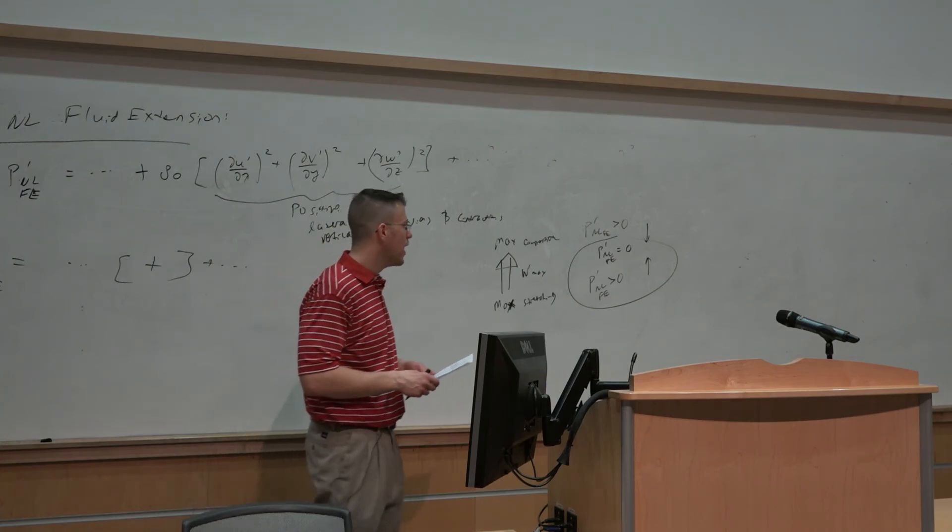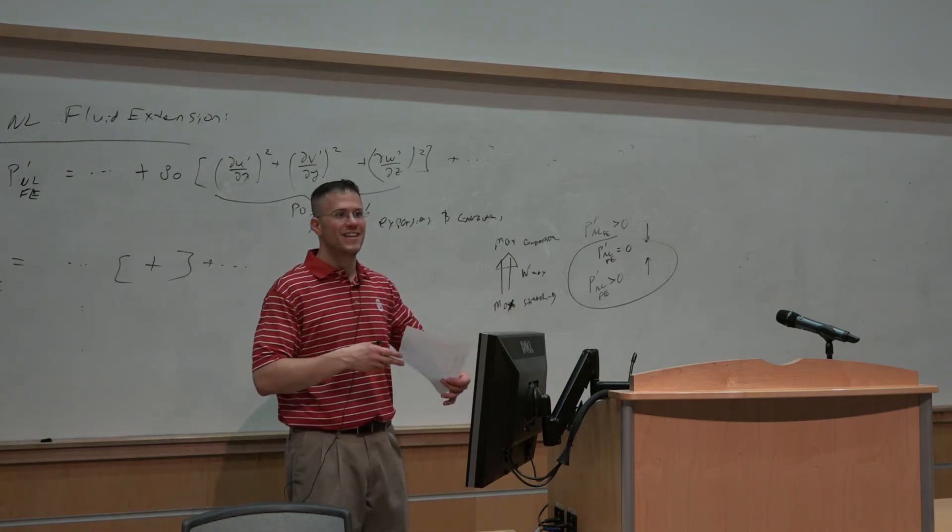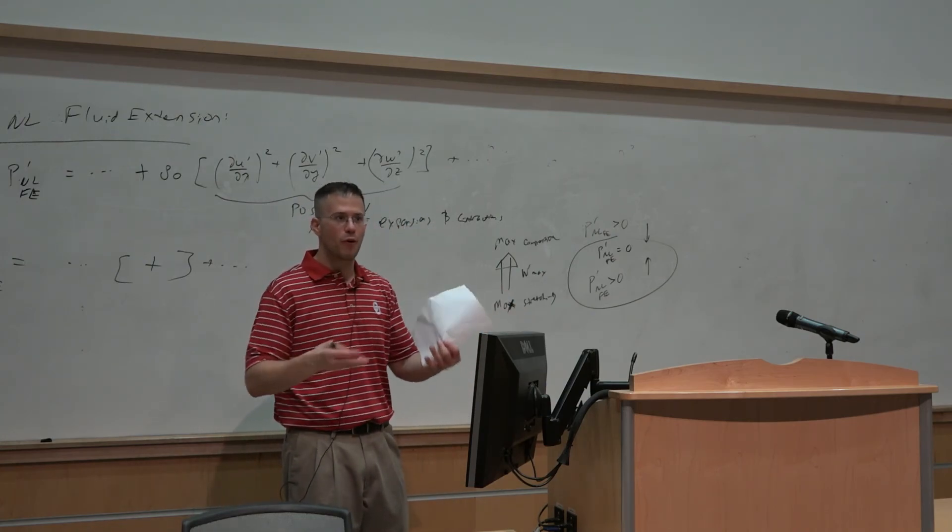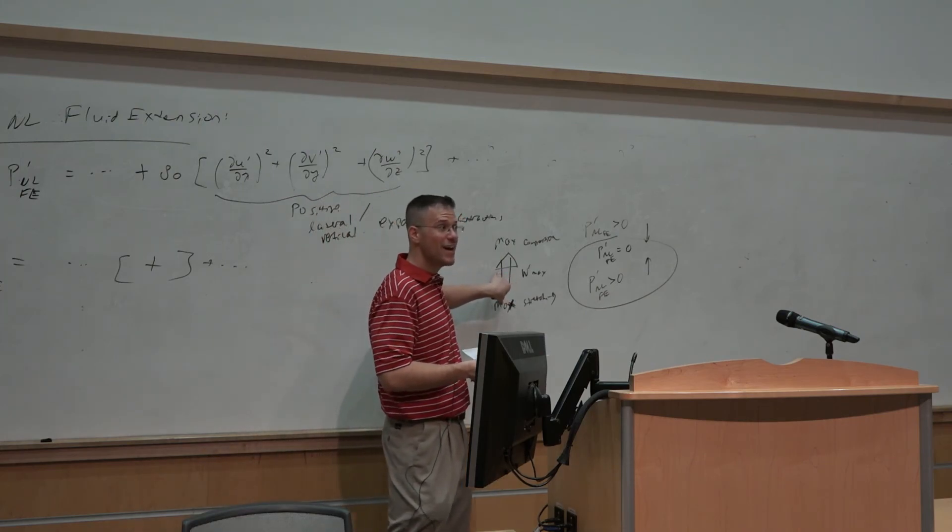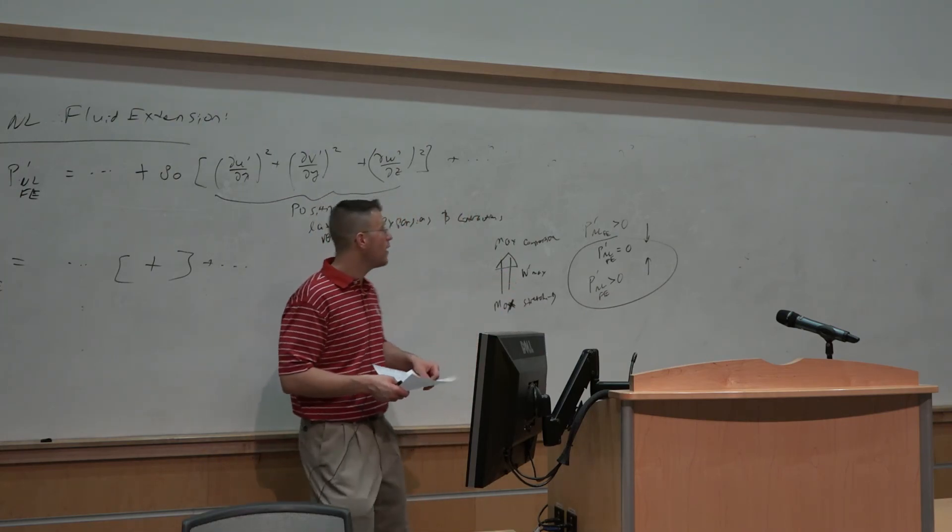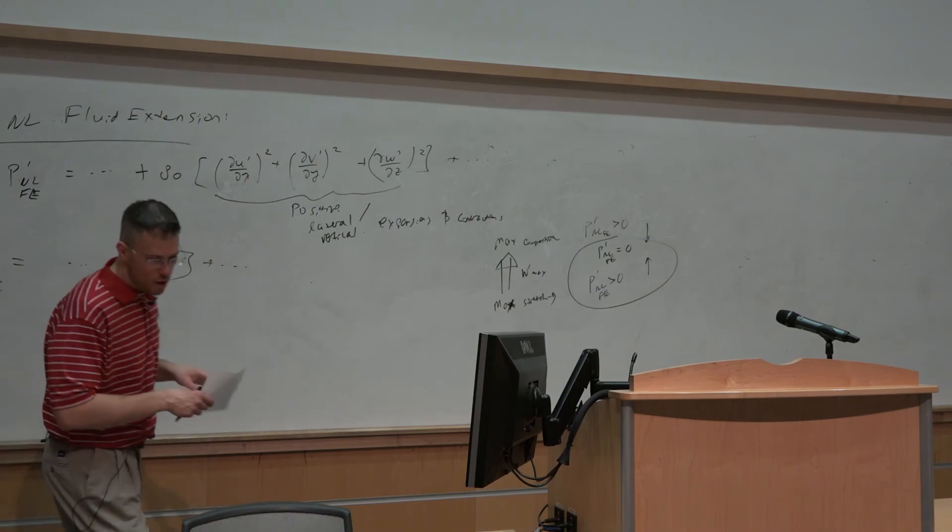So regardless of whether we have background spin resulting from either tilting of the horizontal vorticity or potential ingestion of streamwise vorticity immediately into the verticals supporting a vertically rotating updraft, we also get this dynamical upward motion occurring with any updraft, whether it's rotating or not, through this fluid extension term over here.